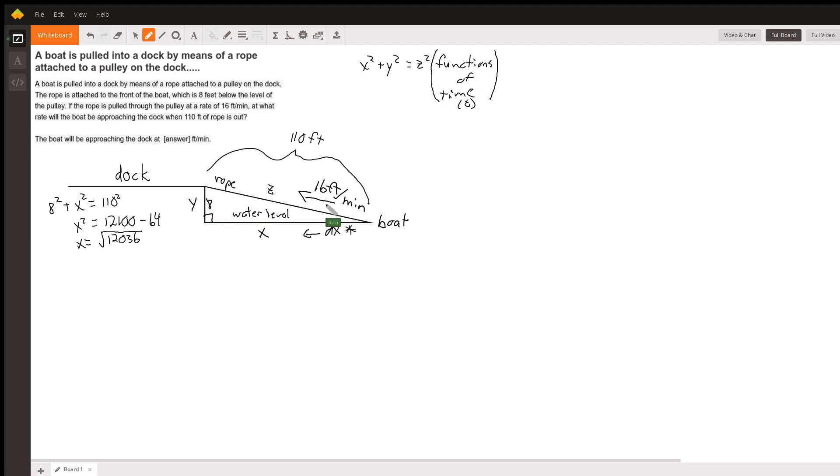So the rope is being pulled this direction along this diagonal where the rope is at a rate of 16 feet per minute, and we're wanting to know how fast the boat is going towards the dock along the water level when the rope is 110 feet out.